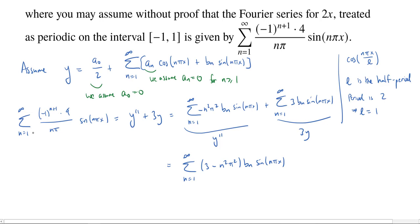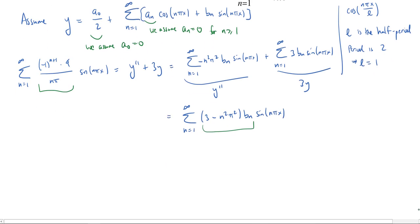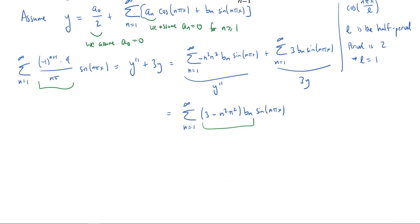All right, so I now have a Fourier series on the left, a Fourier series on the right. They're both all written in terms of sine. And so, the coefficients are going to have to be equal. So, this implies that, well, okay, these coefficients are equal, and of course, all I care about are the bₙ's. So, the bₙ has to equal this coefficient on the left divided by this 3 - n²π² on the right.